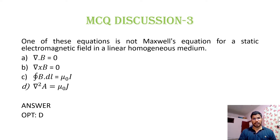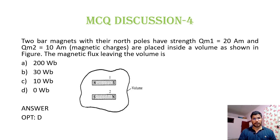MCQ 3: One of these equations is not a Maxwell equation for a static electromagnetic field in a linear homogeneous medium. Option A: del dot B = 0. Option B: del cross B = 0. Option C: closed surface integral of B dot dl = μ₀I. Option D: del² A = μ₀J. Here, del dot B = 0 (isolated magnetic charge doesn't exist) and option B are correct. Option C is Ampere's circuit law. Option D is not satisfied, so option D is the answer.